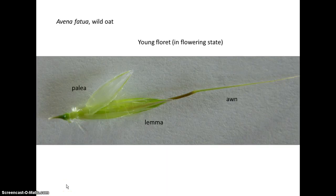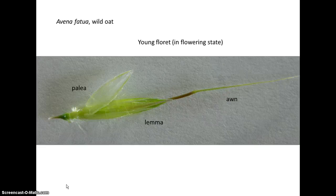Let's review before going on. The basic unit of an inflorescence is a spikelet. A spikelet will have two glumes at its base and one or more florets. A floret consists of a lemma and a palea, and inside them a flower, which generally consists of one pistil and three stamens.